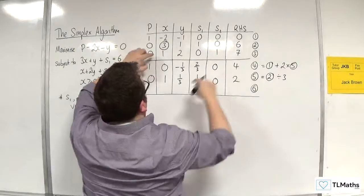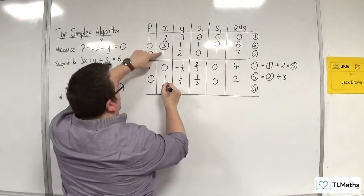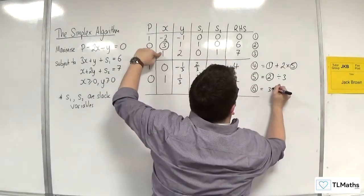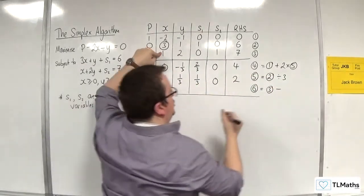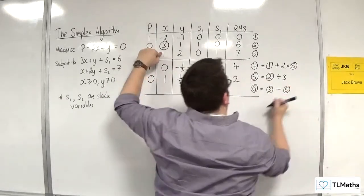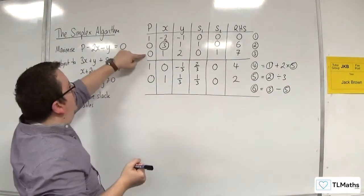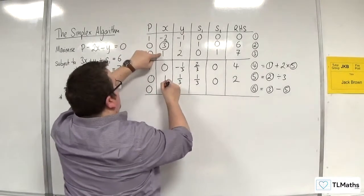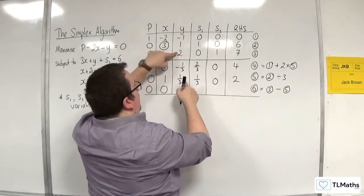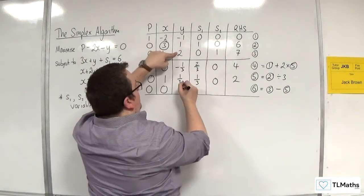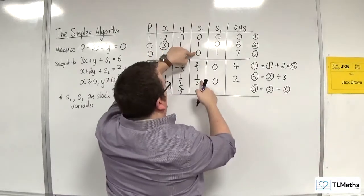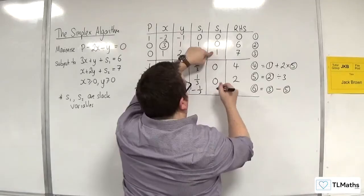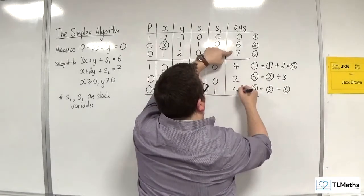Then for equation 3, I need to get this to be 0. So I want 0 here. And that's only going to happen if I do equation 3 and take away 1 lot of equation 5. So I'm going to do 0 take away 0. 1 take away 1. 2 take away 1 third. So that's going to get me 5 thirds. 0 take away 1 third. So minus 1 third. 1 take away 0 is 1. 7 take away 2 is 5.